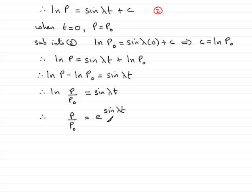And all I need to do now is multiply both sides by p₀, and you have p = p₀e^(sin λt). And that brings us to the end of part C.